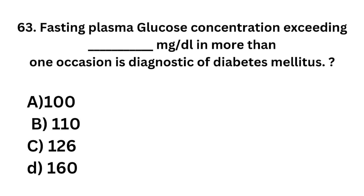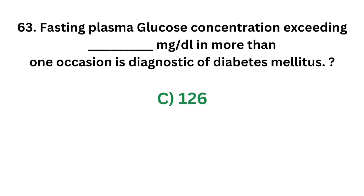Question number 63. Fasting plasma glucose concentration exceeding how many mg/dL on more than one occasion is diagnostic of diabetes mellitus? Option A - 100; Option B - 110; Option C - 126; Option D - 160. The correct answer is Option C, 126. A fasting plasma glucose concentration of 126 mg/dL or more on more than one occasion is diagnostic of diabetes mellitus.